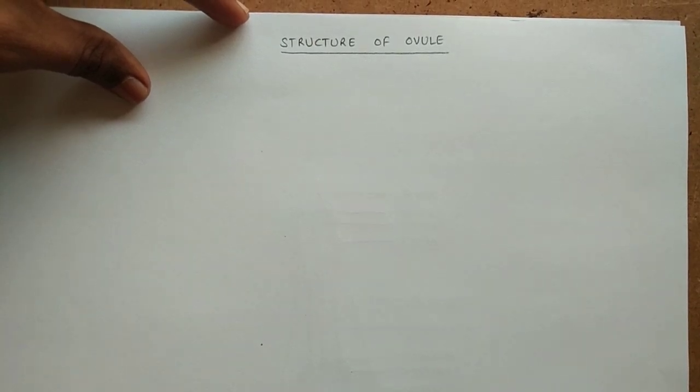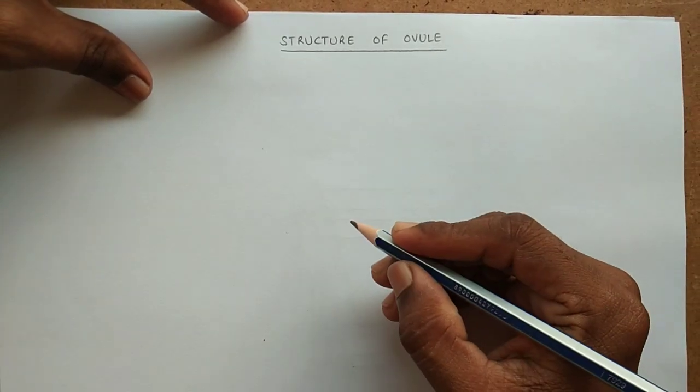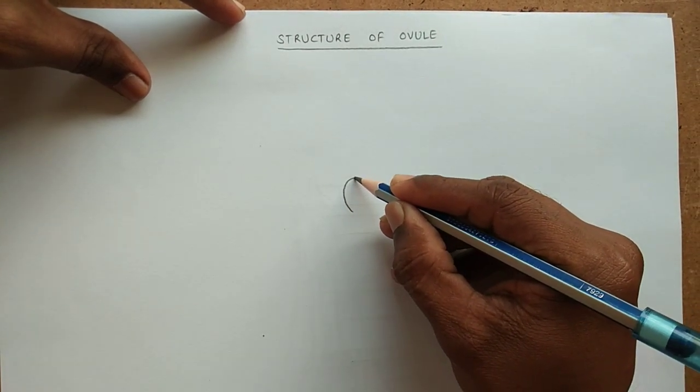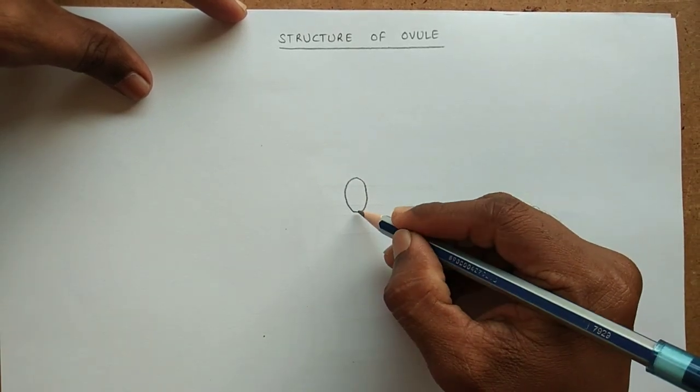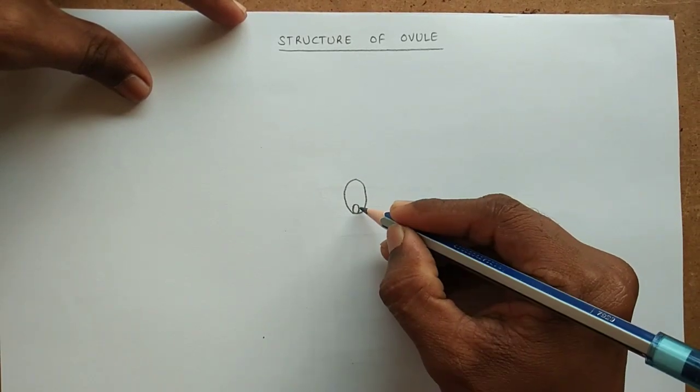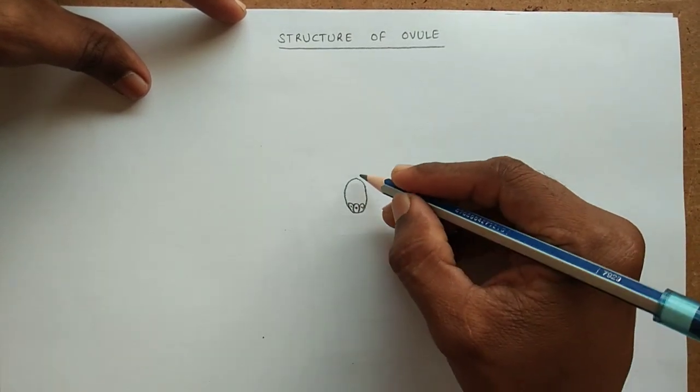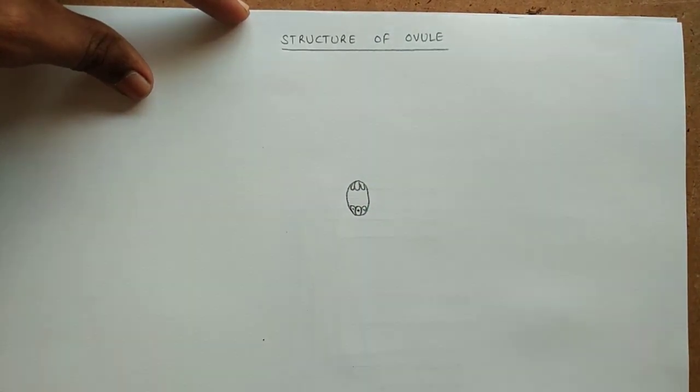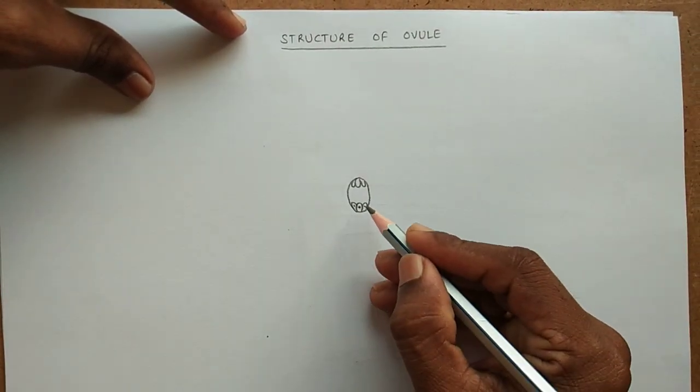Hi friends, in this video we are going to learn how to draw the structure of ovule. For this, first we have to draw the embryo sac like this. The embryo sac is a seven cell, eight nucleus structure.